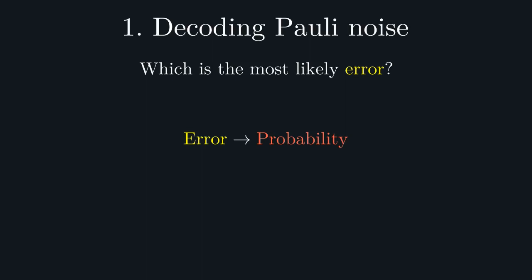This might take the form of an IID error model, where qubits are independently afflicted by noise, or a more complicated model capable of accommodating correlations between errors at different points in space or time. But for the moment, we'll just consider some general Pauli noise model.